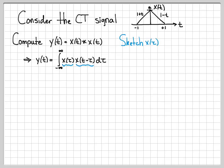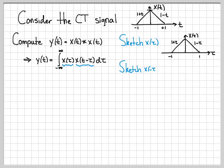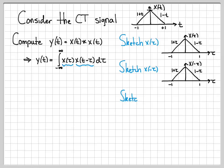The first things we typically do are sketch these basic signals. Sketching x of tau is easy because it looks exactly like x of t — the only difference is we're using a different variable. To sketch x of t minus tau, I usually do it in a few steps. First I sketch x of minus tau, the time-reversed version. Because the signal is an even function, x of minus tau looks exactly like the original signal.